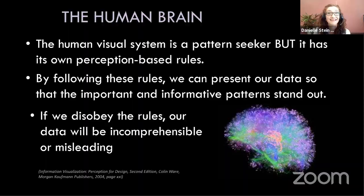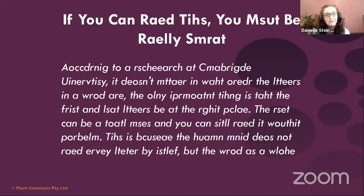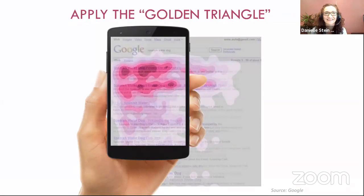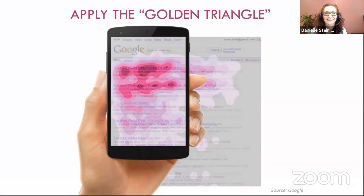Our brains are amazing — they can very quickly make sense of something that is absolute gobbledygook. As long as we've got the first letter, last letter, and the correct word length, you can basically make sense of it. A couple of best practices: the Z reading pattern, and laying out your dashboard so that it makes it easy for people to read.